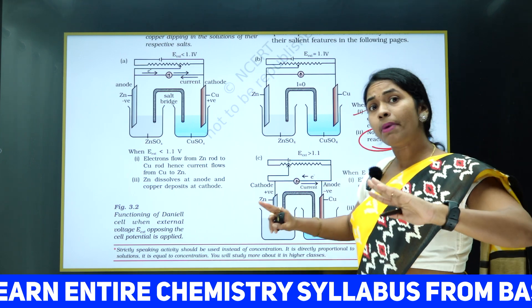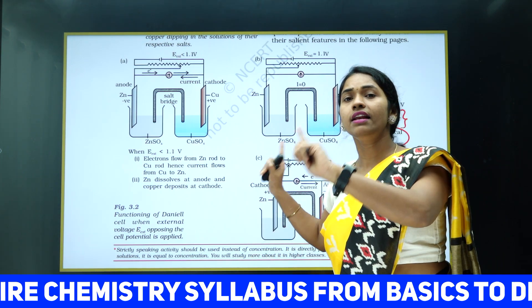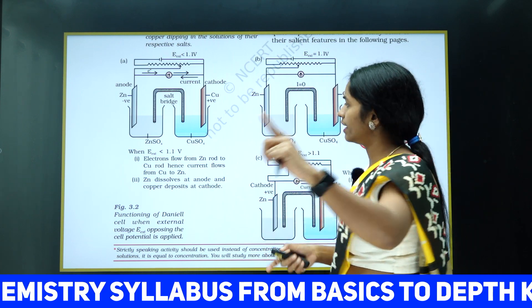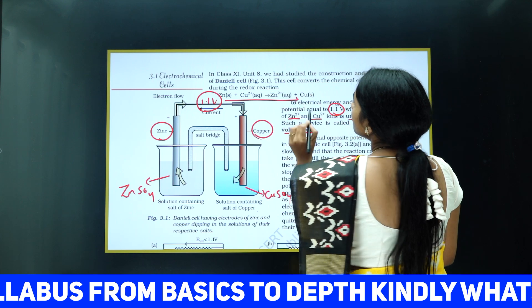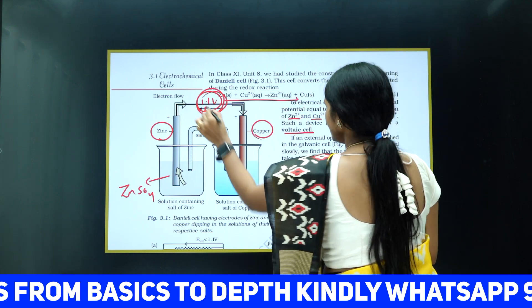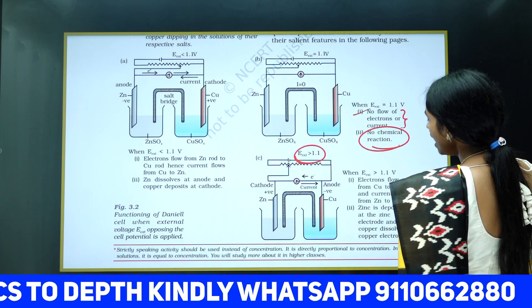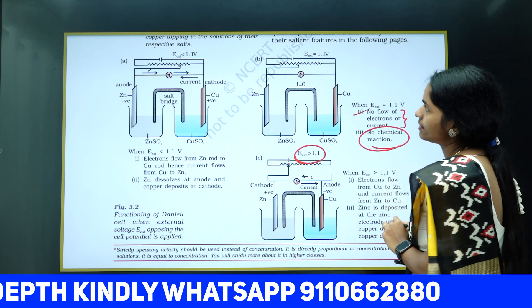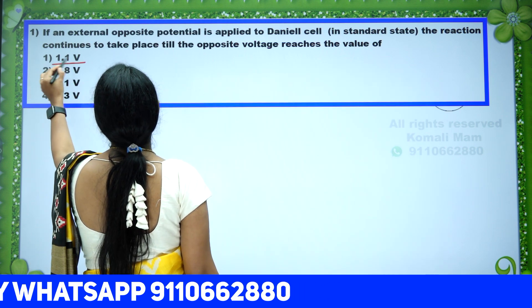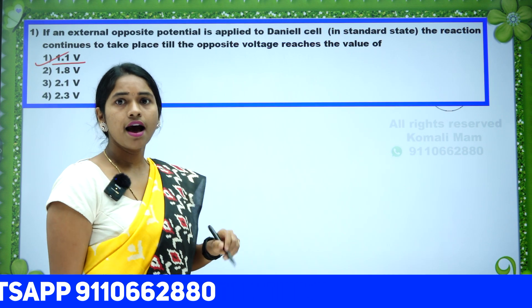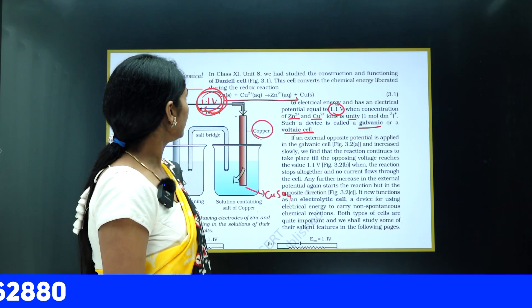For example, if we pass more than 1.1 volts externally, then the reaction takes place in the backward direction. The forward reaction was taking place before; once you pass more than the external potential of 1.1 V, the reverse reaction takes place.